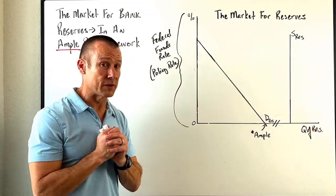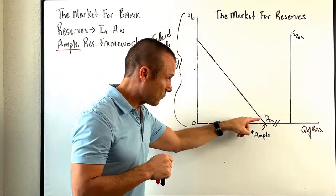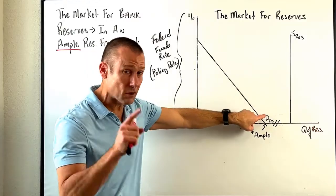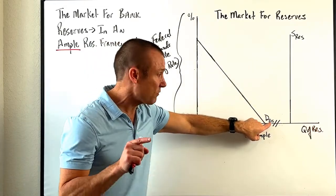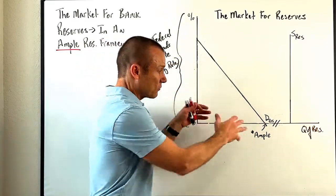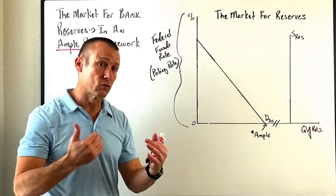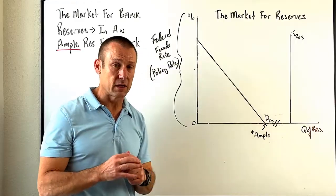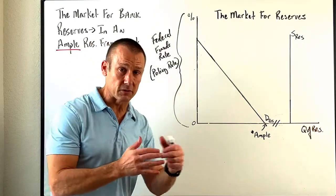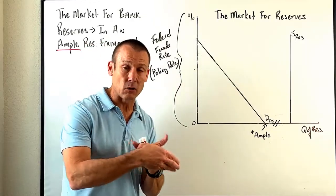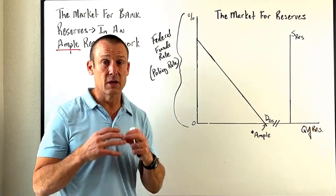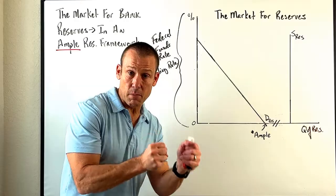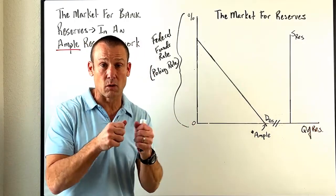Now let's get to the graph. The first thing I want you to see is the demand for reserves curve — this is the market for bank reserves. This curve represents the demand of commercial banks to hold reserve balances at the Fed. This demand curve is like all demand curves: it's a marginal benefit curve. Reserves held at the Fed provide benefits to commercial banks — one of the biggest being helping them settle payments when depositors write checks to other depositors.